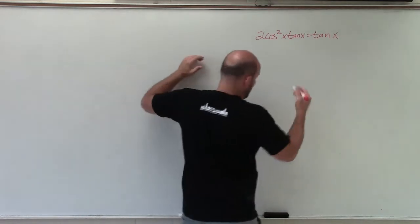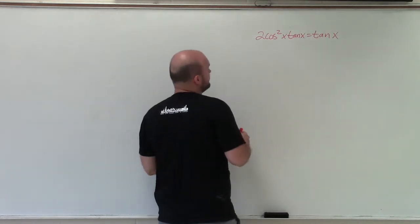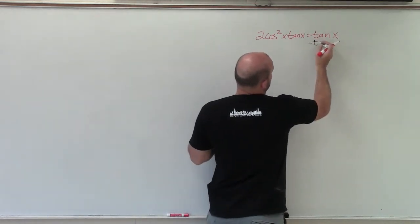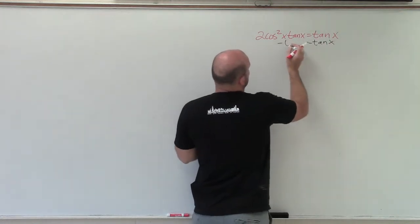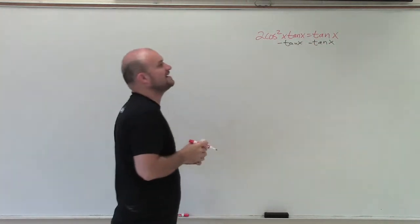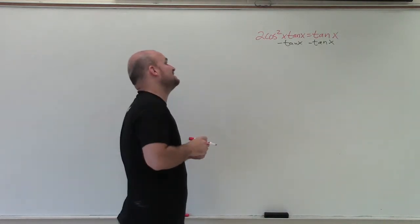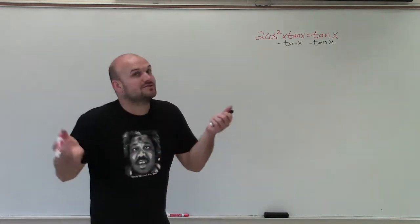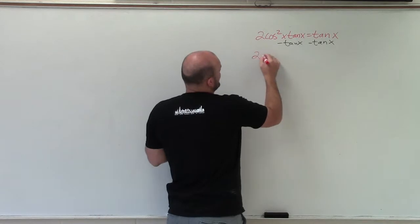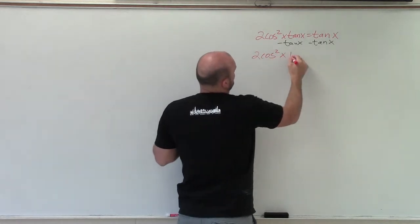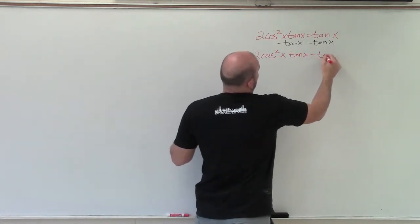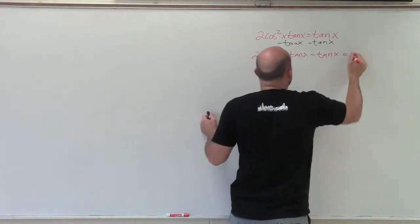To do that, I first need to get everything onto the same side. So I'll subtract tangent of x from both sides. Now, 2 cosine squared of x times tangent of x minus tangent of x — those are not like terms, so I cannot subtract them. I have to leave it like this.